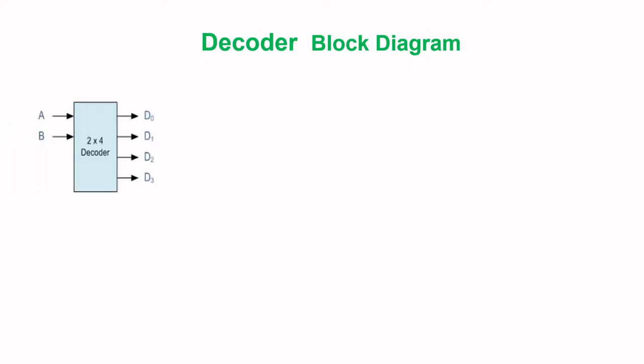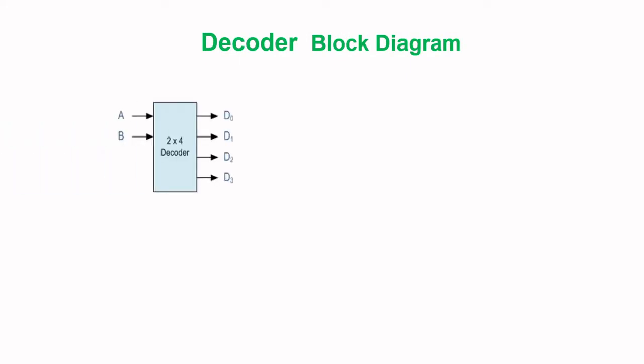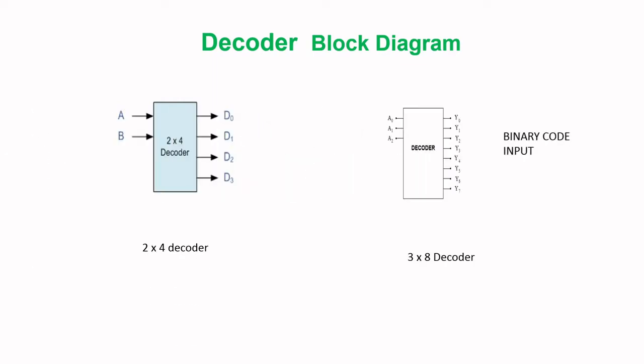Block diagram of decoder: a 2-to-4 decoder has inputs A and B, and outputs D0, D1, D2, D3. The block diagram of a 3-to-8 decoder has binary code inputs A0, A1, A2, and outputs Y0, Y1, Y2, Y3, Y4, Y5, Y6, Y7. Only one output is activated at a time.